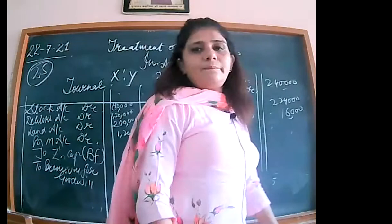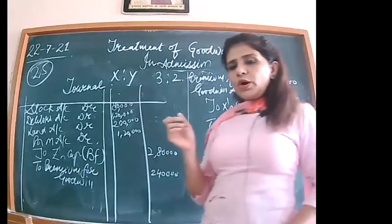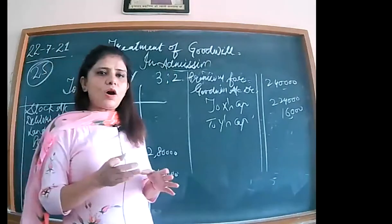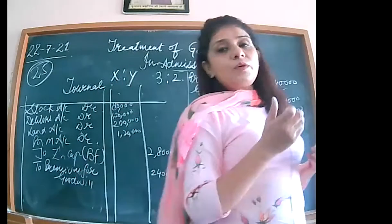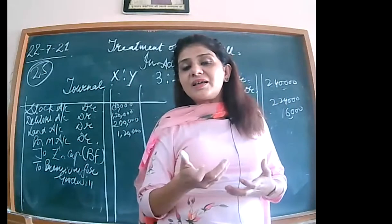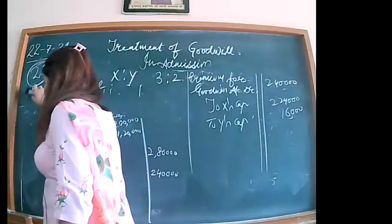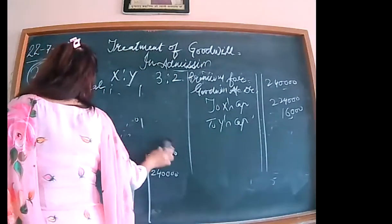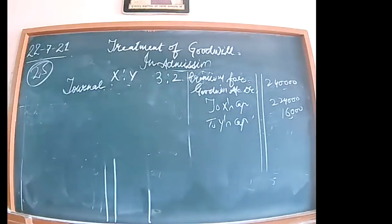Now a further case: if the share of goodwill to be brought in by Z is 2,40,000 but he only brings part of it in cash, we call this the case where only a part of his share of goodwill is brought in cash. In that case, we pass the entry: cash account debited to premium for goodwill for the amount brought in cash.